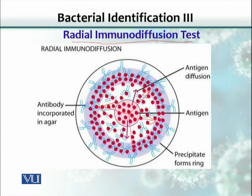When antigen-antibody interaction happens, a specific concentration of both reactants is reached. As you can see, in this zone the antigen is more than the antibodies, but as the antigen diffuses out it gets diluted. So a specific concentration is automatically reached where you can see a precipitation reaction happening in a visible form. This is called single radial immunodiffusion.